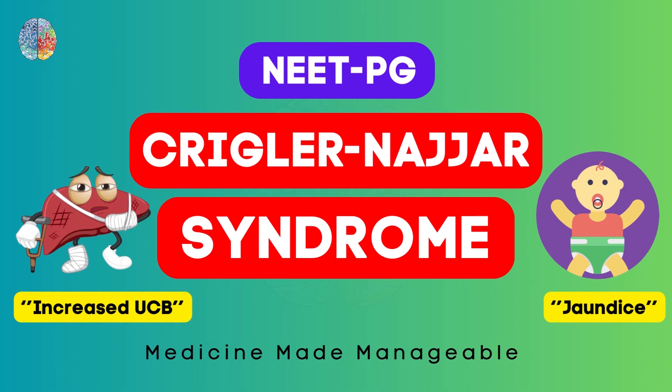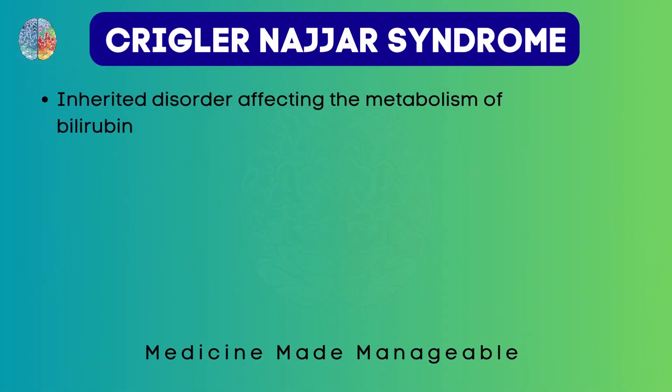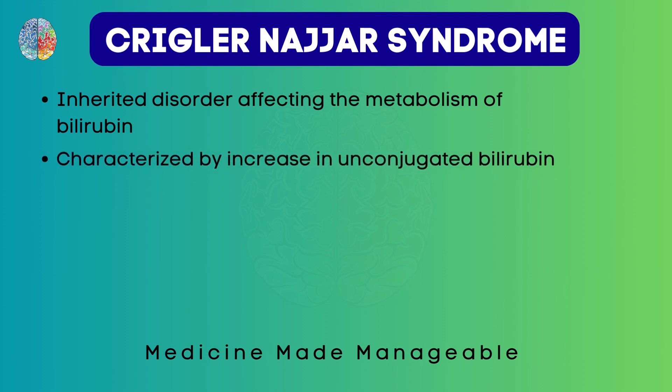Hello everyone. In this video, we're going to be talking about Crigler-Najjar syndrome. So what is this syndrome exactly? It is an inherited disorder which affects the metabolism of bilirubin, and it is characterized by an increase in unconjugated bilirubin.